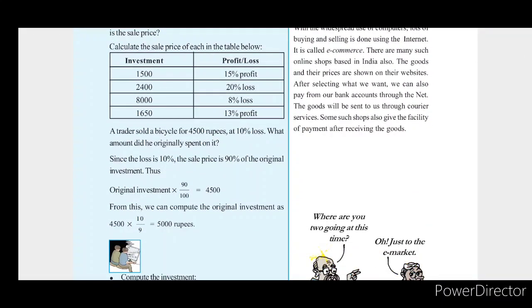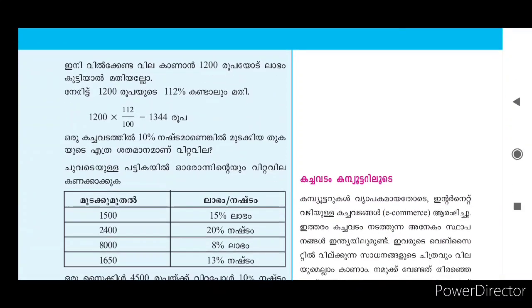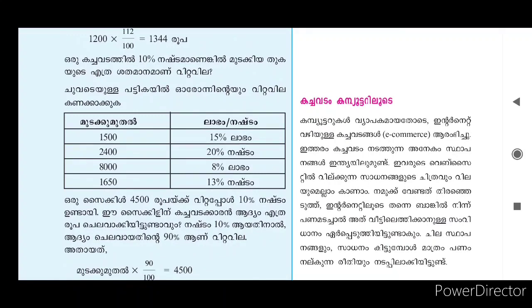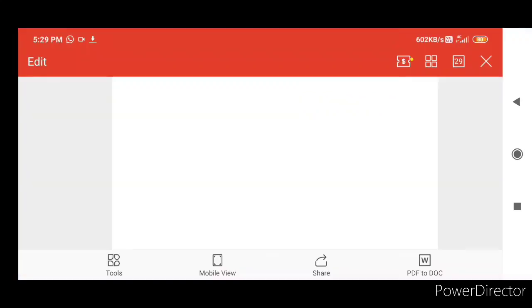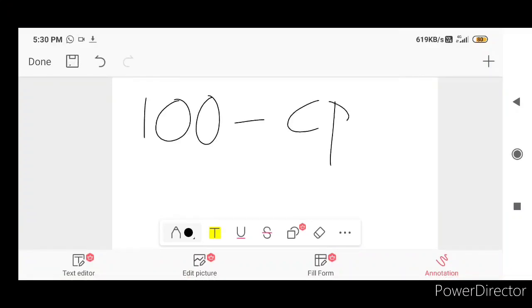Calculate the sale price of each of these in the table below. The cost price is the lowest price, and we are going to find the cost price of 100.